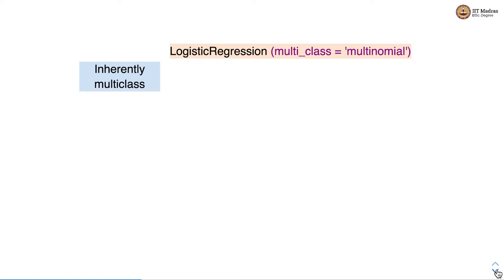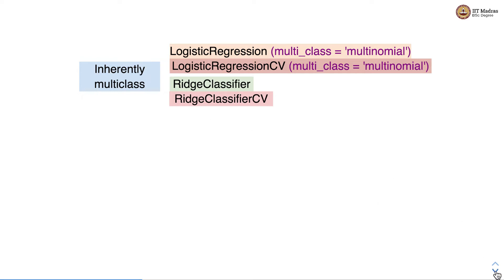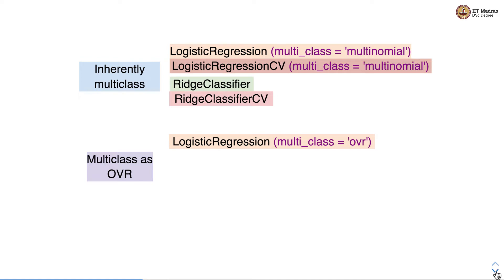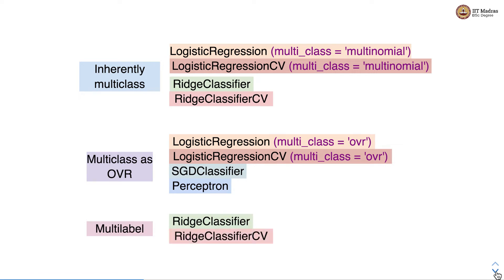Logistic regression with multi_class equal to multinomial is an inherently multi-class estimator. Logistic regression CV also supports multi-class by setting the multi_class parameter to multinomial. Ridge classifier and its counterpart ridge classifier CV are also inherently multi-class. Logistic regression can also implement multi-class using the one versus rest strategy by setting the multi_class argument to OVR. SGD classifier and perceptron also use the one versus rest strategy to implement multi-class classification. Ridge classifier, on the other hand, is an inherently multi-label estimator.